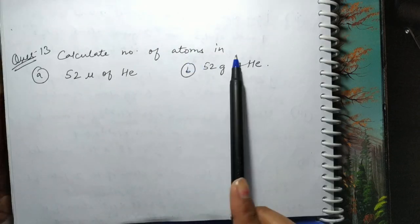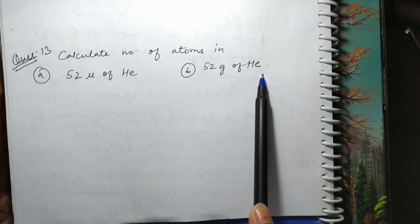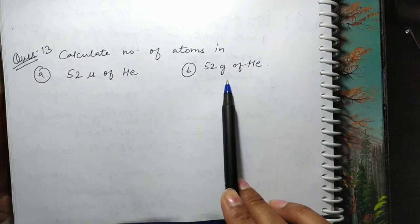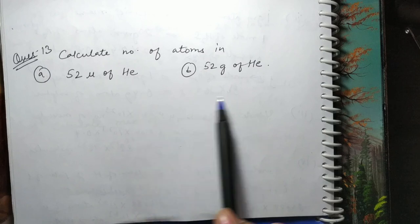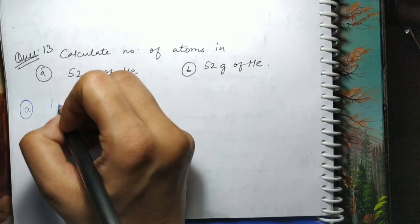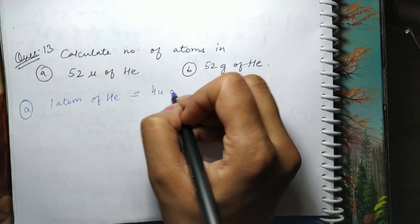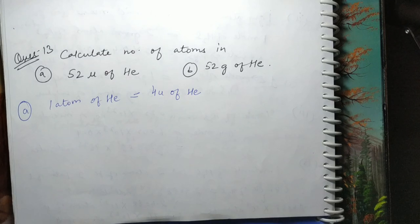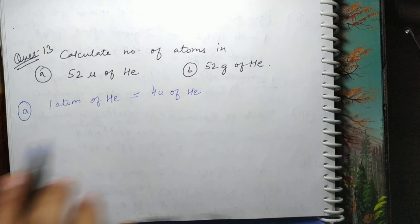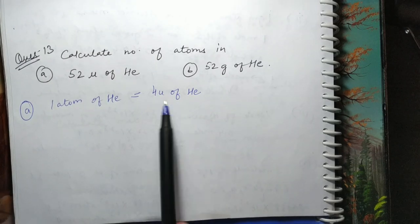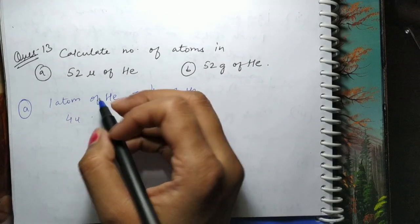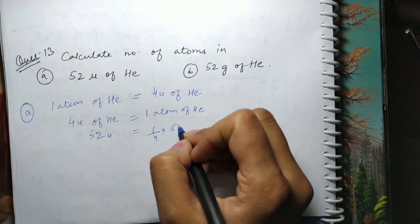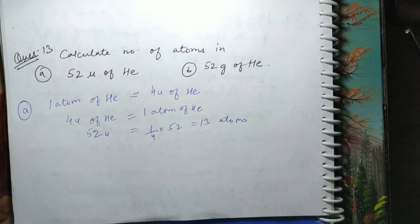Next question: calculate number of atoms in (a) 52 amu of helium, (b) 52 gram of helium. Dono mein bahut fark hai. Part (a): 1 atom of helium = 4 amu. So 52 amu = 52 ÷ 4 = 13 atoms.